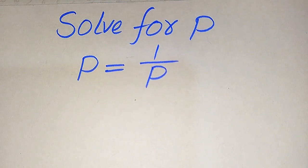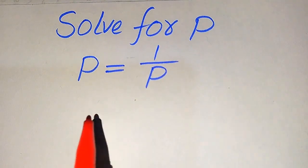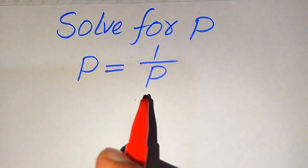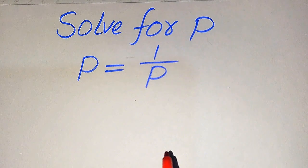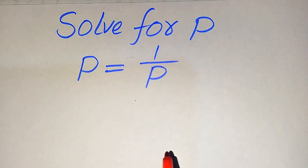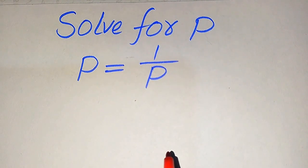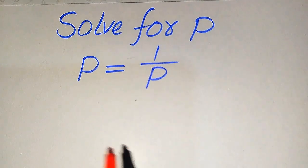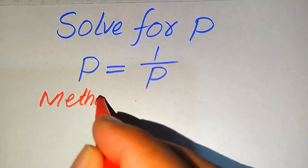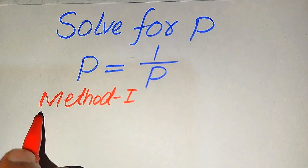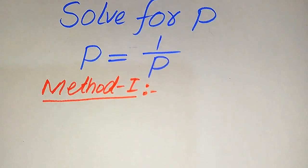Hello everyone. How to solve this problem: find all the values of P if P equals 1 divided by P. We will solve this for all values of P. First, we find all the roots of this equation, and at the end we verify which roots are solutions and which are extraneous roots. We solve this problem using two methods.